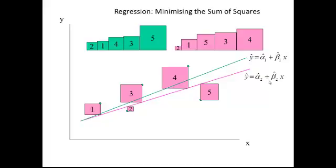But we can skip the step of trying different lines, because using calculus we can go straight to the best values for alpha-hat and beta-hat — specifically, the ones which give you the smallest sum of squares. But that's for another video.